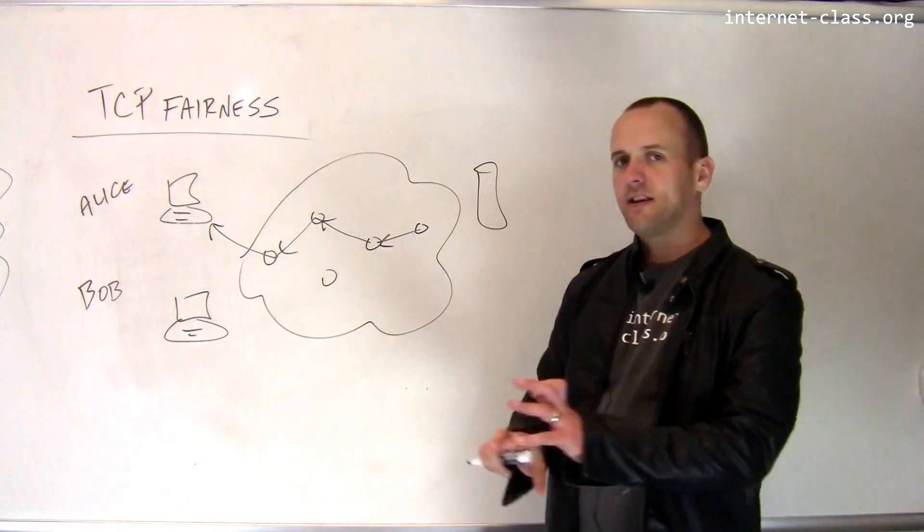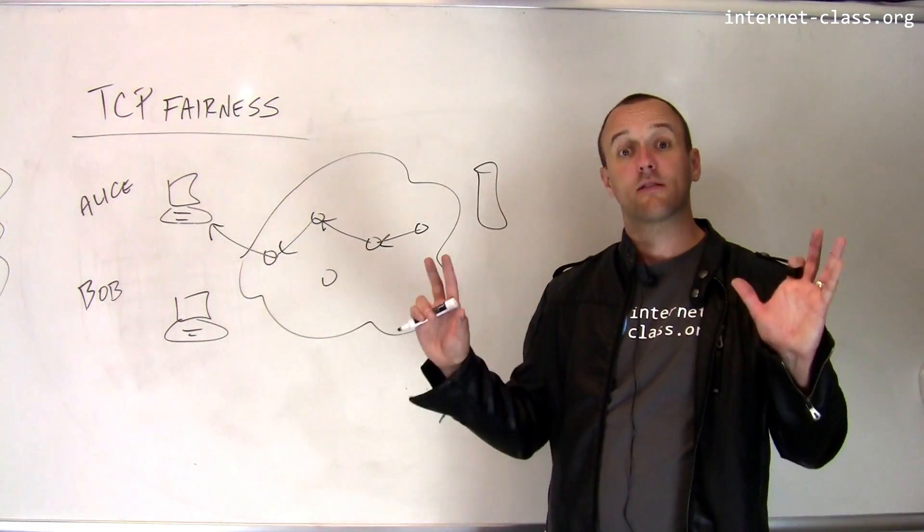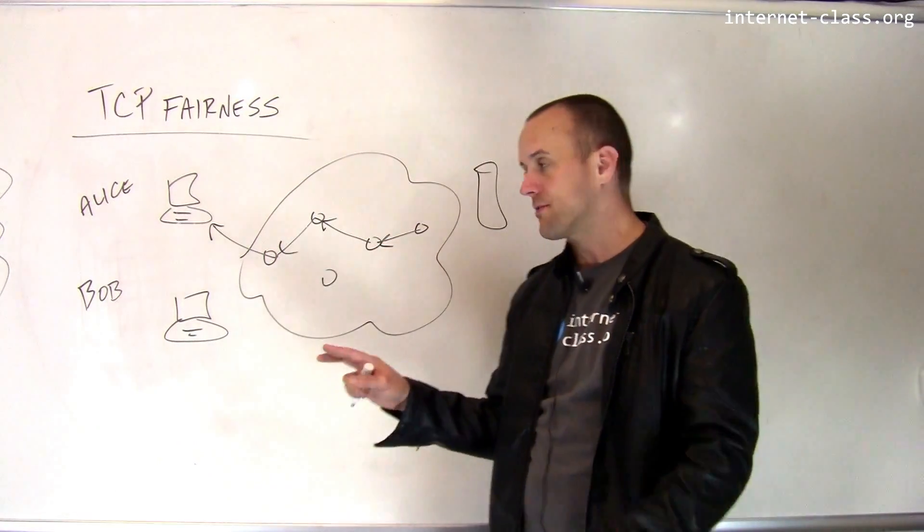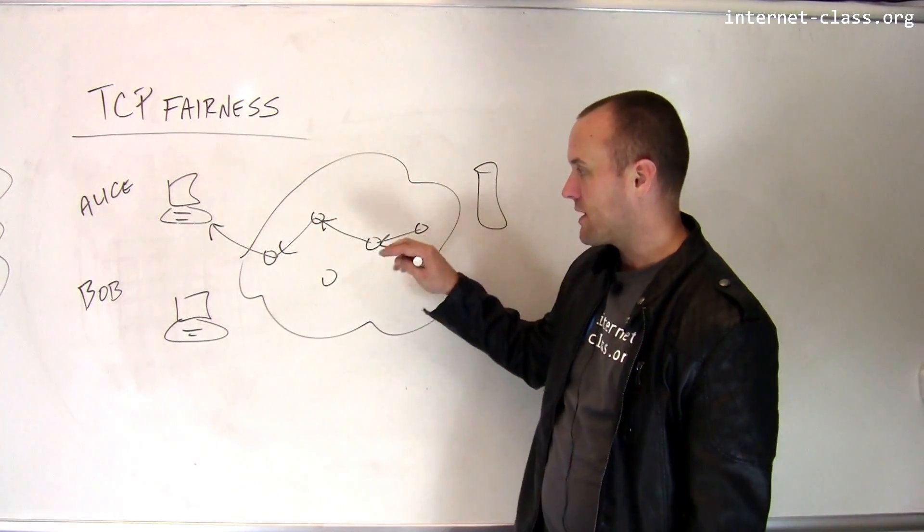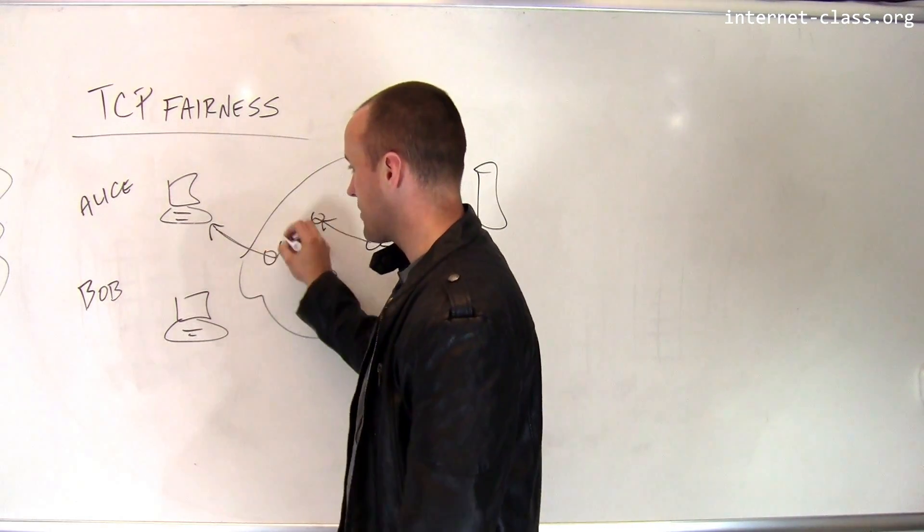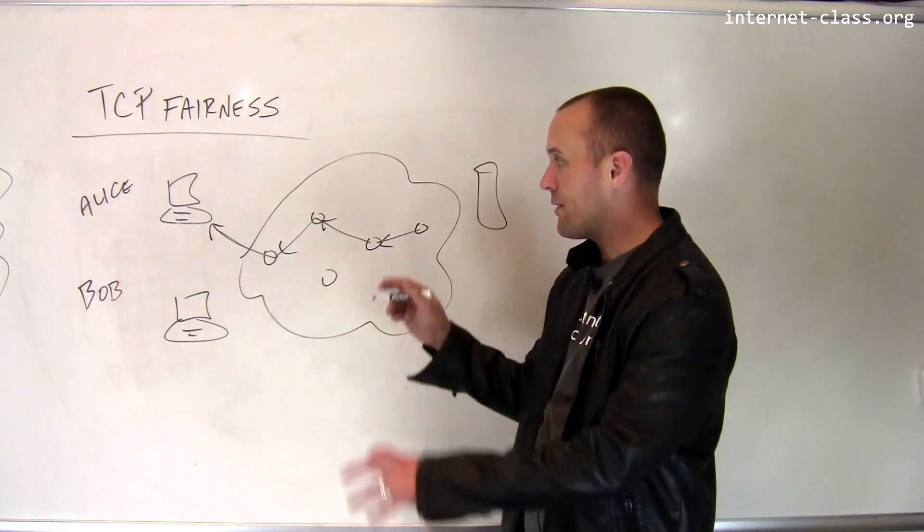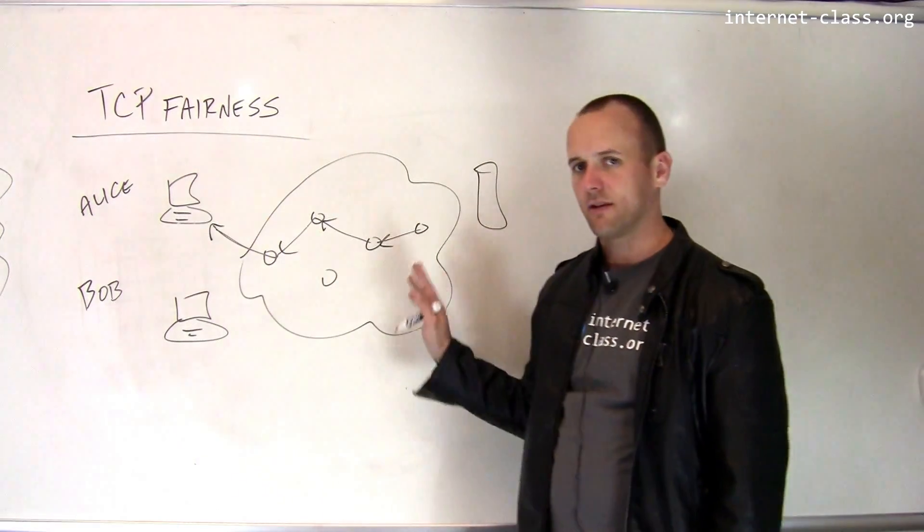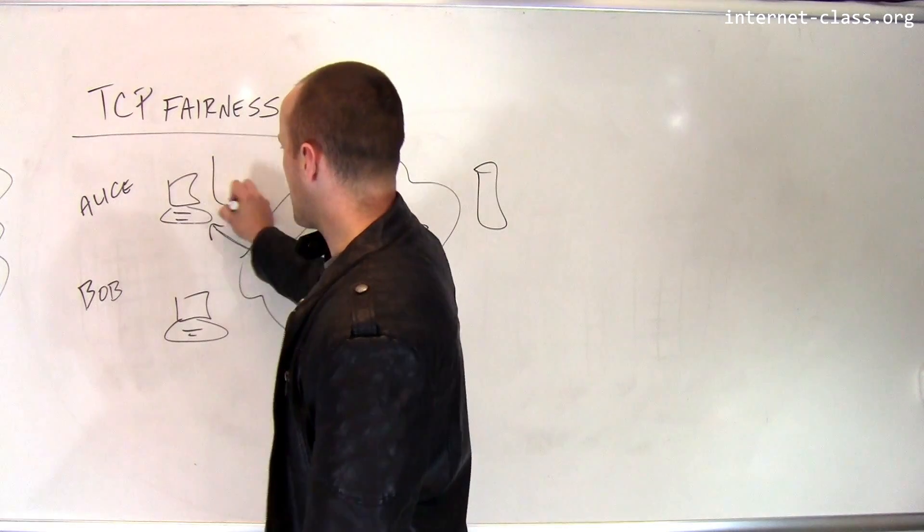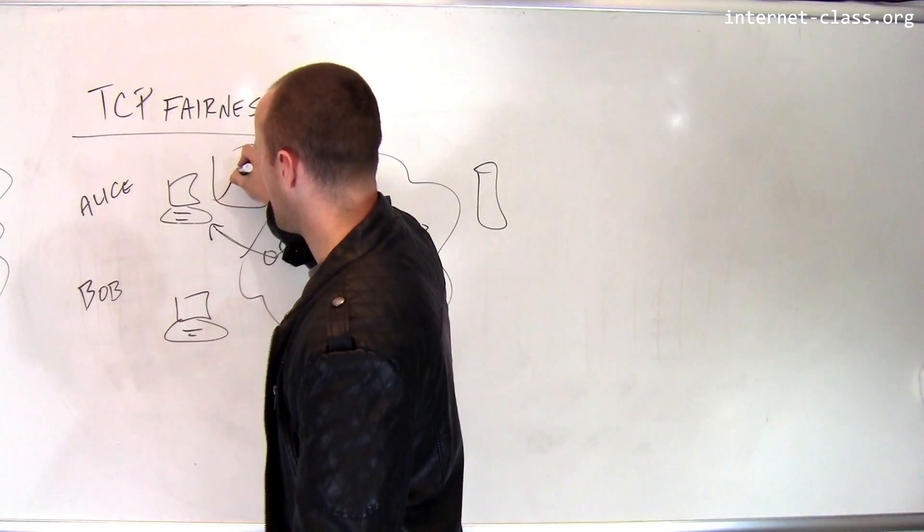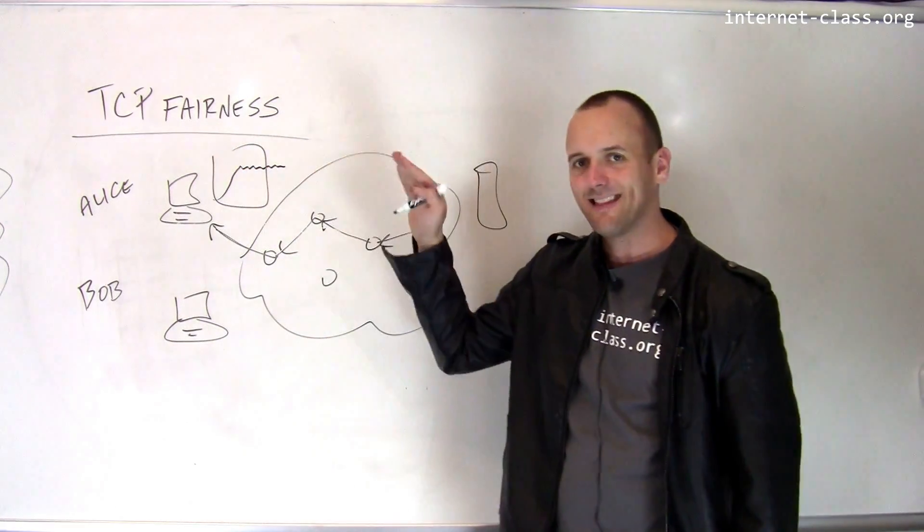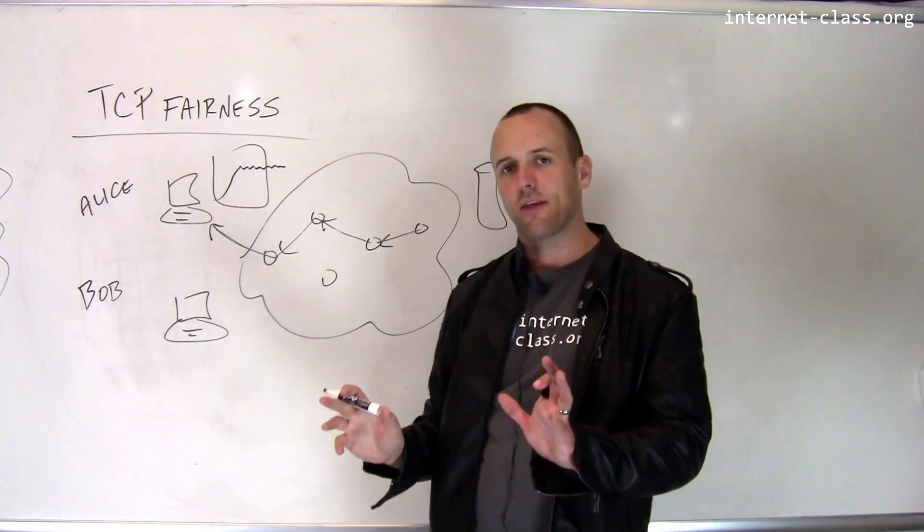So once packets start to get dropped, TCP figures the link is at full capacity. Packets can drop for a bunch of reasons. The core of the internet may have plenty of available capacity but it's possible that this last hop close to Alice's house doesn't have as good capacity as the core internet. At some point TCP will start off slow and it's going to identify a bottleneck, and then it's going to try to maintain this level of speed.